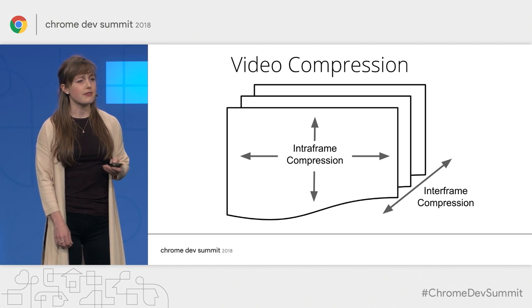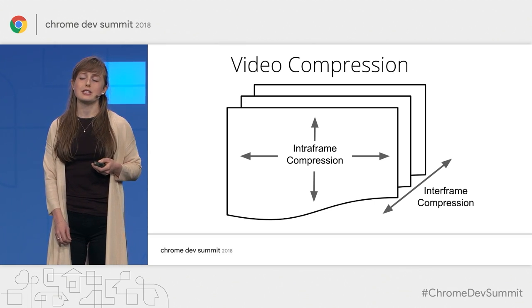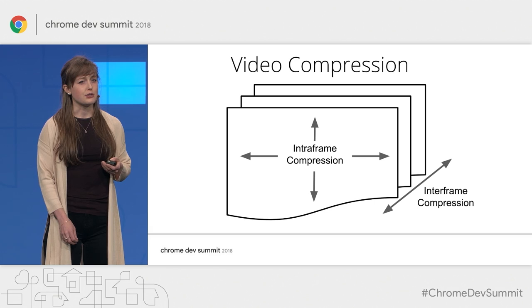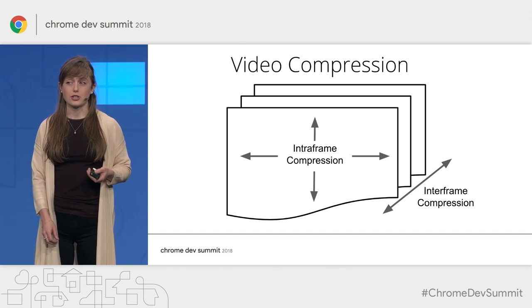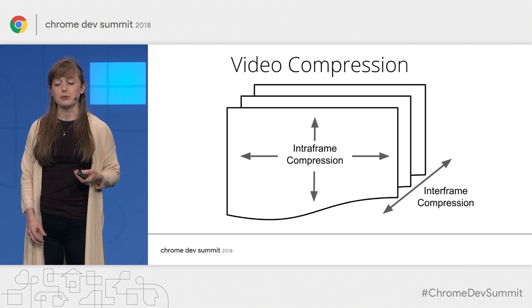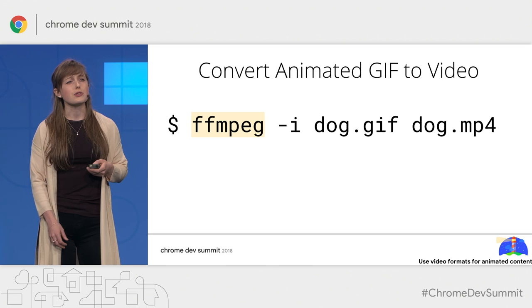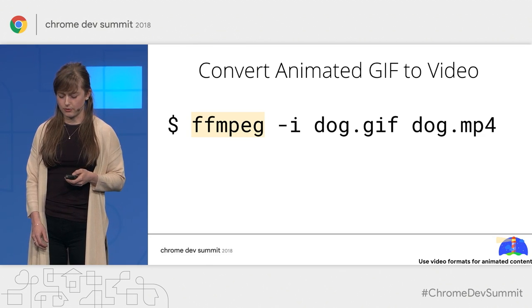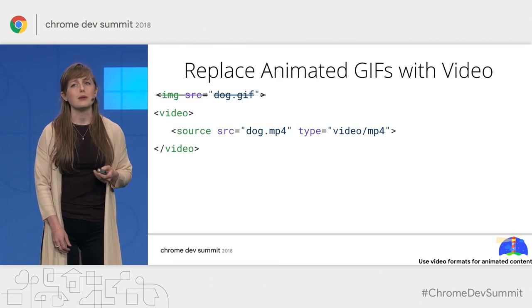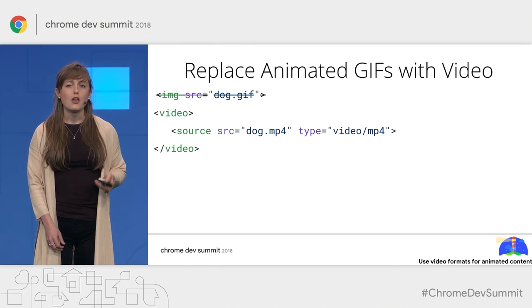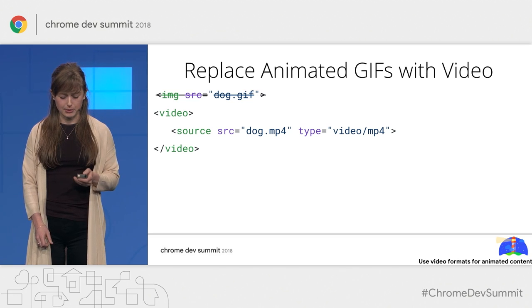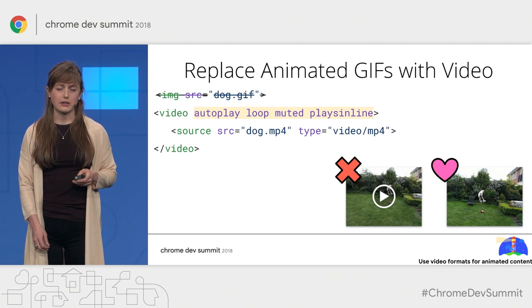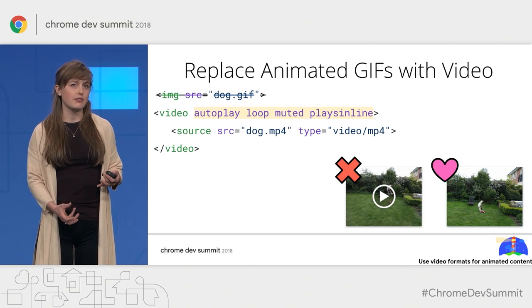The reason for the drastic difference in file sizes between videos and animated GIFs lies in the differences between their compression algorithms. Video compression algorithms are far more sophisticated — not only do they compress the contents of each frame, but they do what is known as inter-frame compression, which looks at the diffs between different frames. The first step in switching from animated GIFs to video is to convert your content using the FFmpeg command line tool. Next, you'll need to update your HTML and replace image tags with video tags, adding four specific attributes to give your video that GIF look and feel.